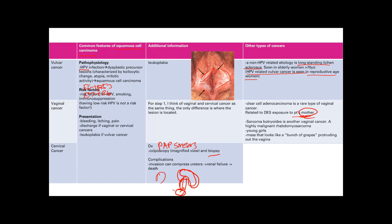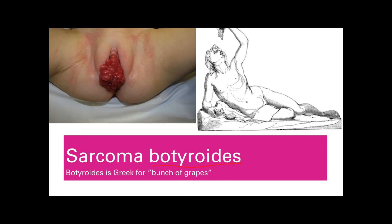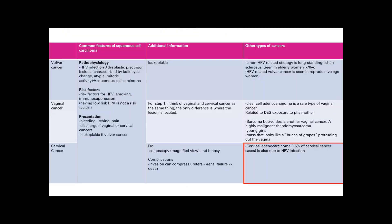Sarcoma botryoides is another vaginal cancer. It is a rhabdomyosarcoma — a malignant cancer of skeletal muscle — seen in young girls. The name comes from the Greek word for 'bunch of grapes,' which reflects its appearance: grape-like clusters protruding from the vagina.